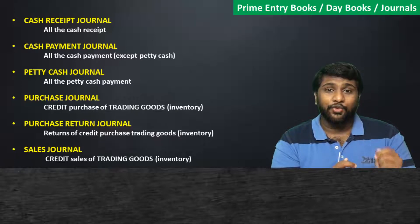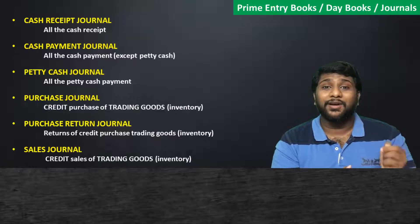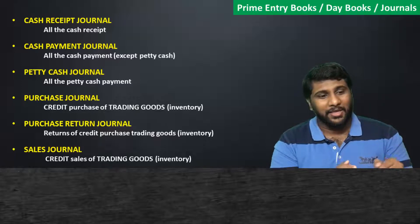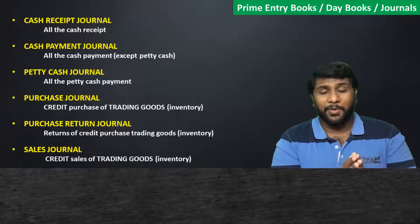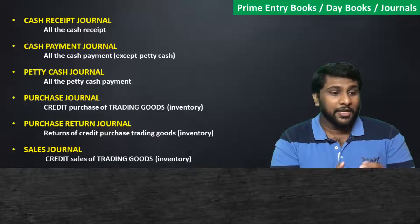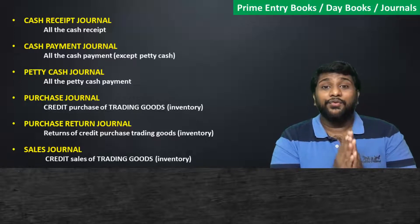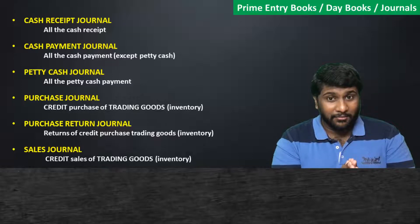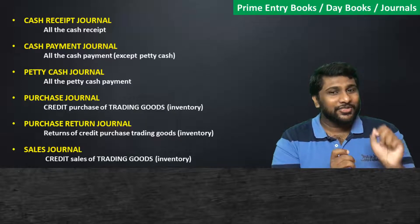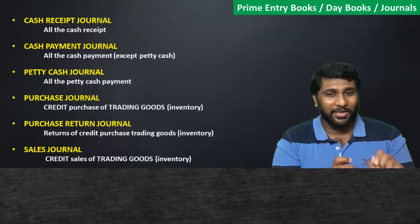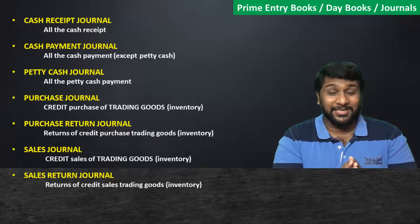In the sales journal, the transactions you record are whatever sales you made on a credit basis. That means you give your customer a credit period — you tell the customer to take the tables and make payment within 30 or 60 days. So trading good sales made on credit are recorded in the sales journal.